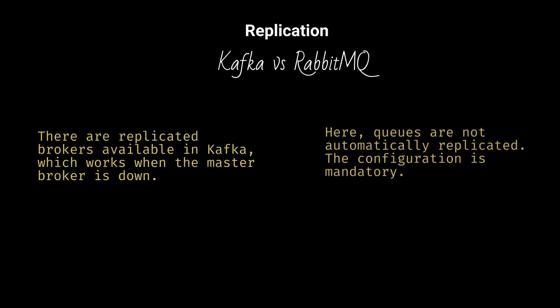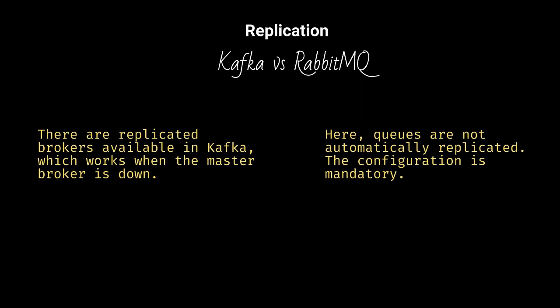There are replicated brokers available in Kafka, which work when the master broker is down. Here, queues are not automatically replicated, and the configuration is mandatory.